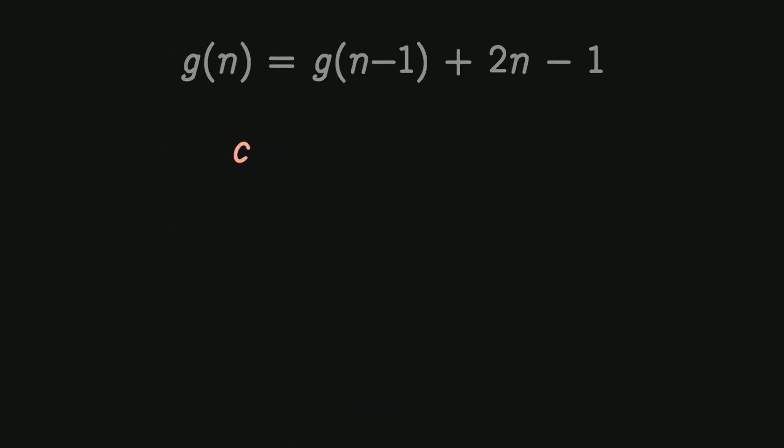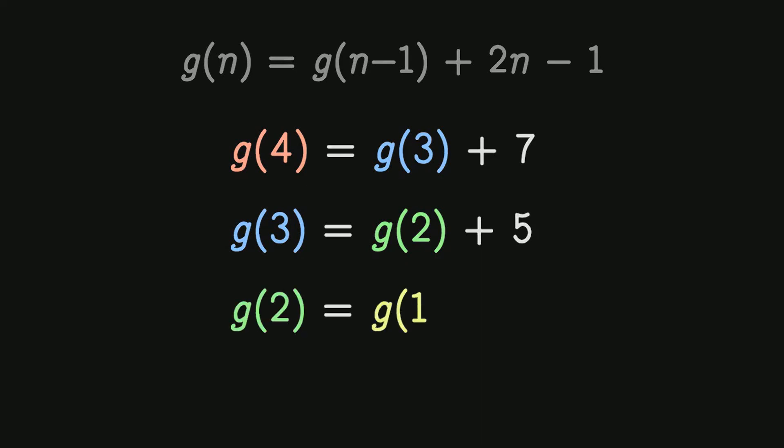For example, we don't know the value of g of 4, because g of 4 depends on g of 3, and we don't know what g of 3 is, because g of 3 depends on g of 2. And we don't know what g of 2 is, because g of 2 depends on g of 1. But we know what is g of 1, because g of 1 depends on g of 0. And g of 0 is 0, so g of 1 is 1. And with g of 1, we can solve g of 2. And with g of 2, we can solve g of 3. And with g of 3, we can solve g of 4.